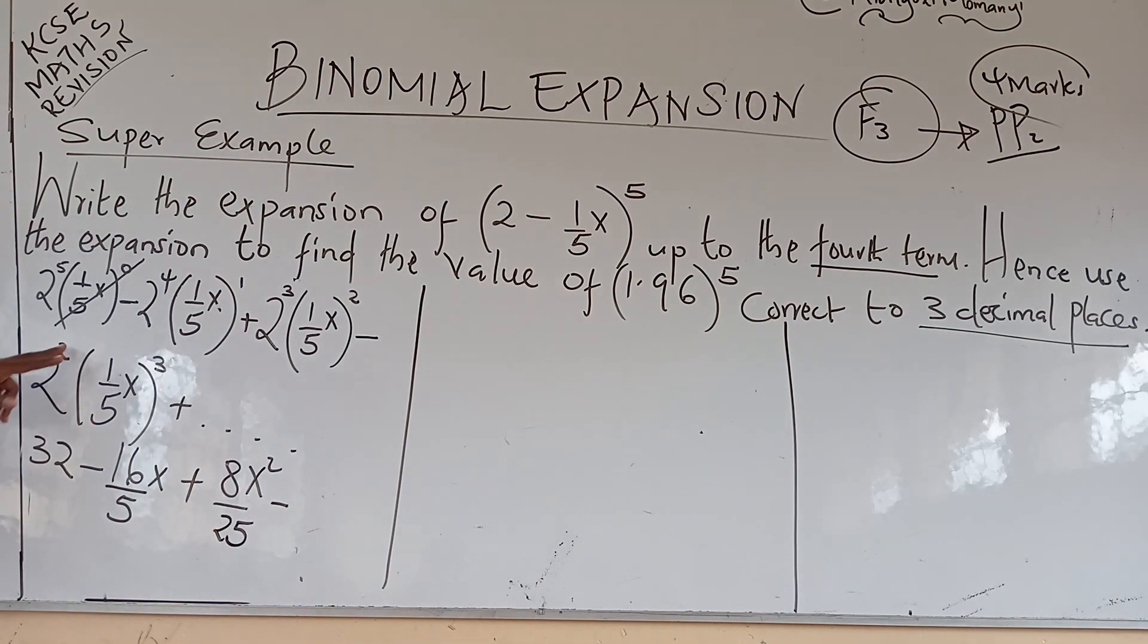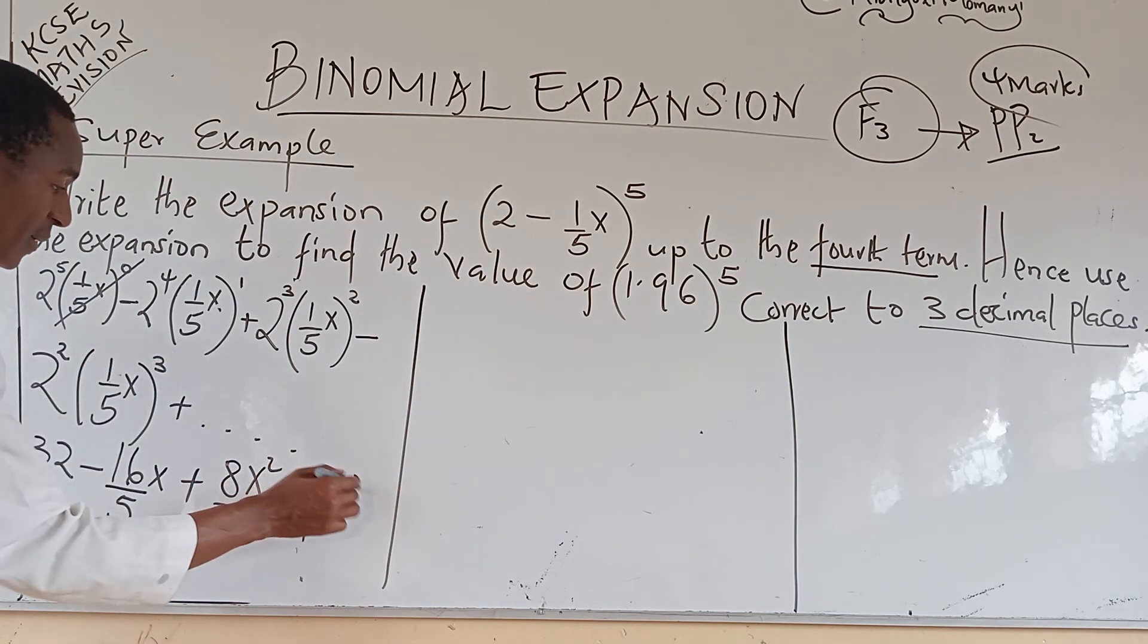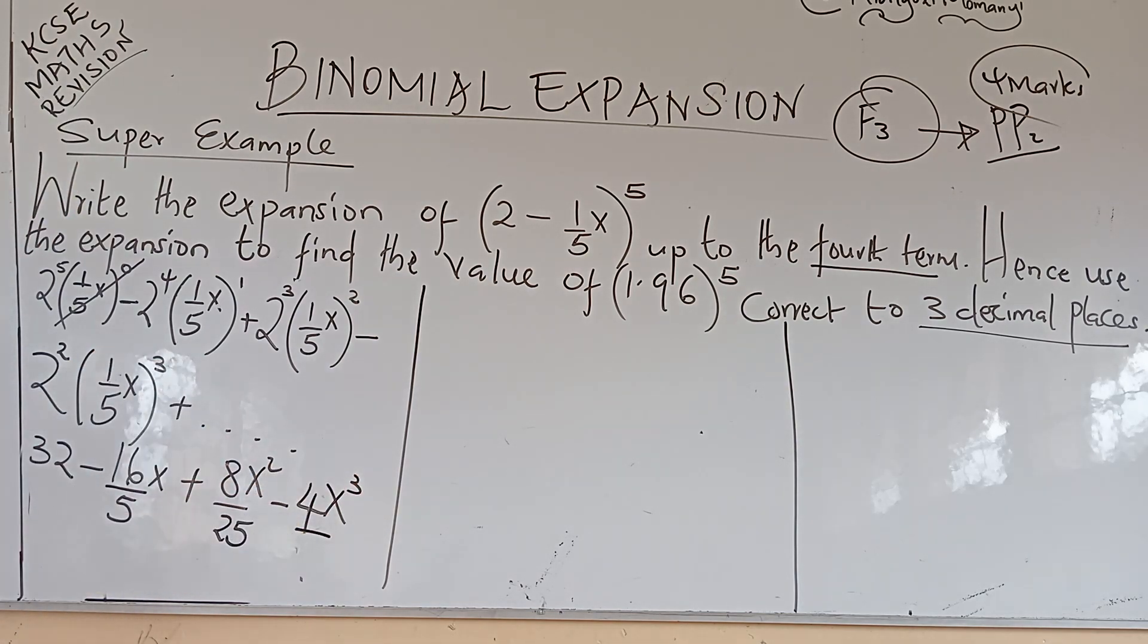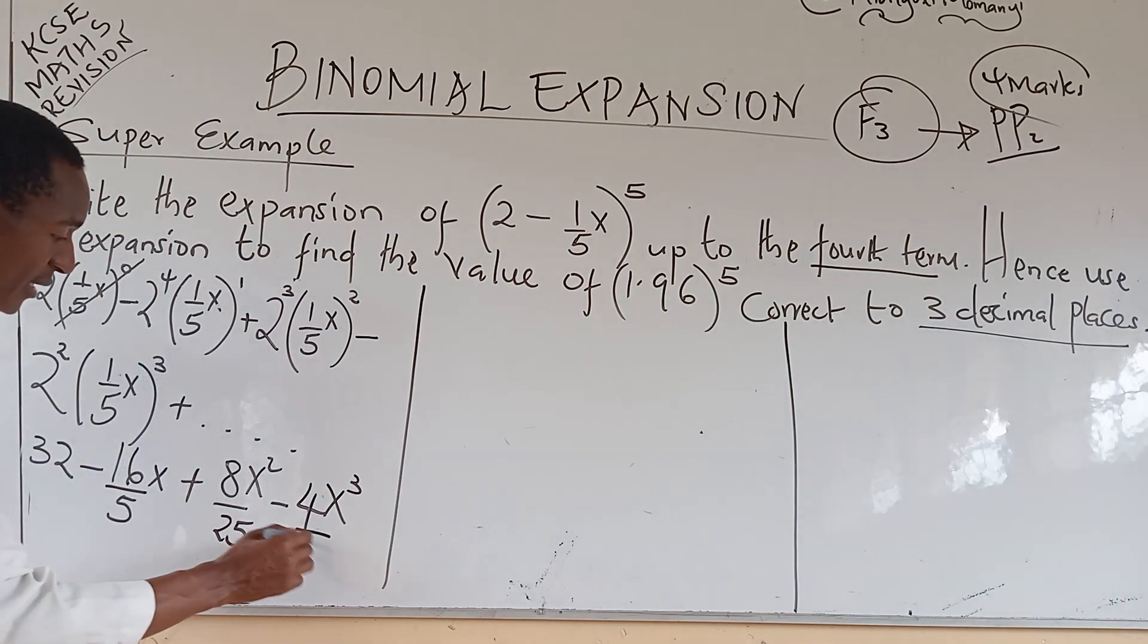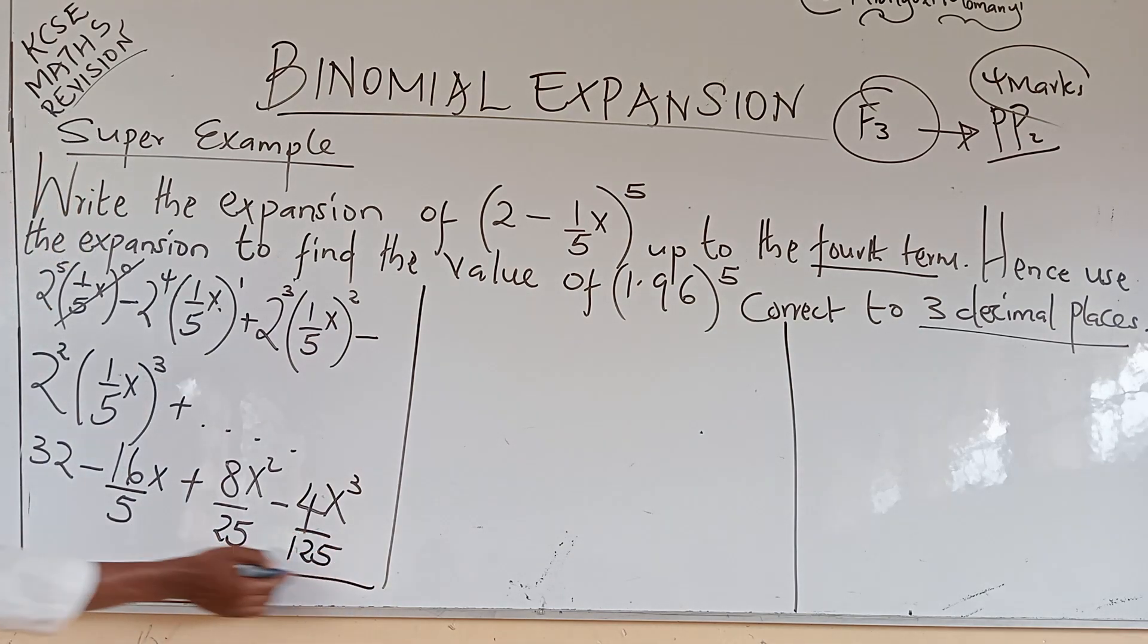Minus, two power two is four. And then, of course, multiplied by x power three over five raised to power three. Five raised to power three is one twenty-five. At this point, you have expanded, but you need to bring in the concept of coefficients.